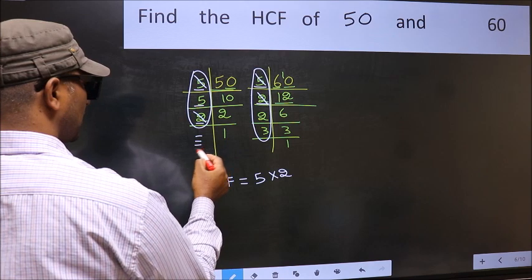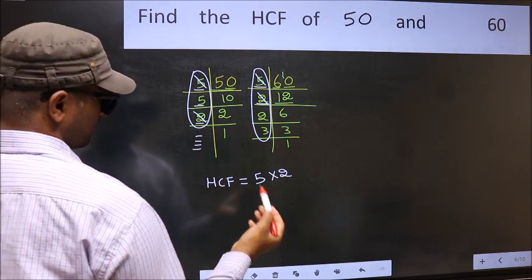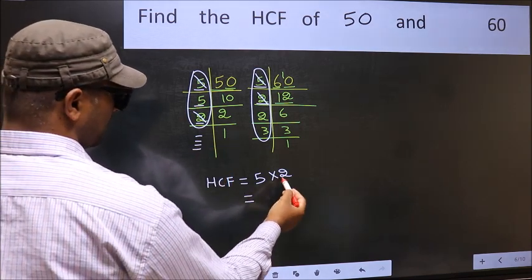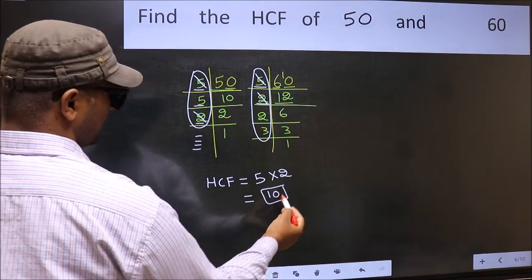No more numbers have been left out. So our HCF is 5×2 is 10. 10 is our HCF.